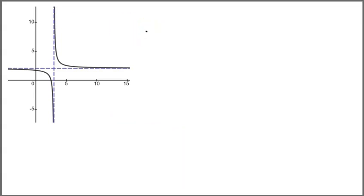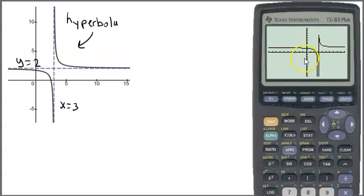Here is a graph of a hyperbola. This graph is called a hyperbola. This is the line x equals 3 and this is the line y equals 2. Now here is a picture of that graph on the graphing calculator.